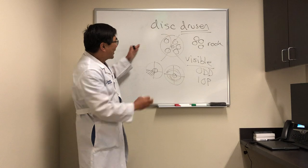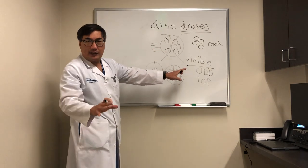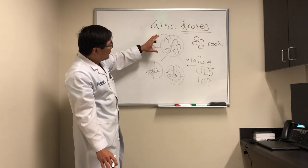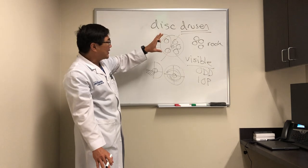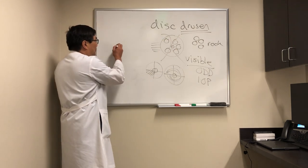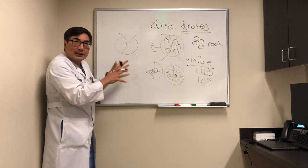So the papillomacular bundle usually is spared in the patients with disc drusen, just like glaucoma. And when you have disc drusen that are visible, it's not a problem, it's when it's invisible to you because it's underneath. So the buried disc drusen are the ones that look like papilledema.